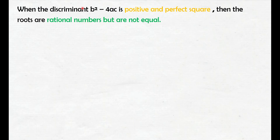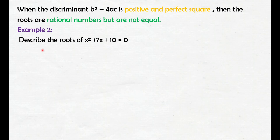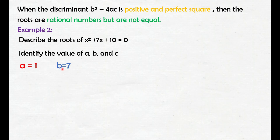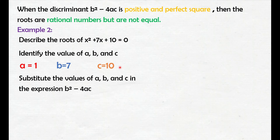When the discriminant b squared minus 4ac is positive and perfect square, then the roots are rational numbers but are not equal. Example number 2: describe the roots of x squared plus 7x plus 10 equals 0. Una nating gagawin is identify the value of a, b, and c. Tandaan natin na kapag walang nakasulat na coefficient, yung coefficient is 1 — invisible 1. Yung a natin is 1, yung b is 7, and yung c is 10.